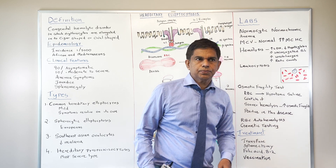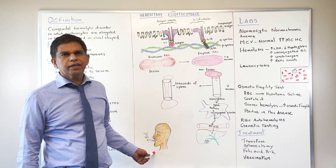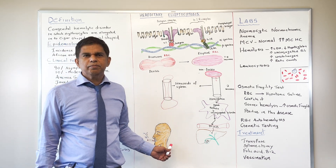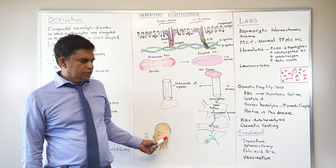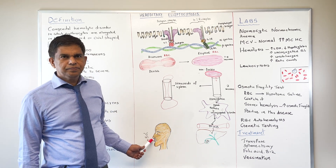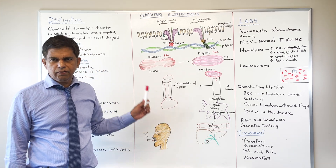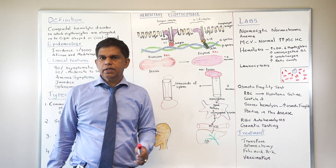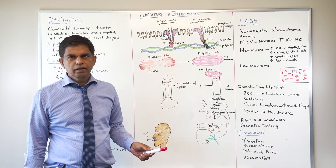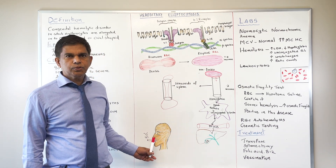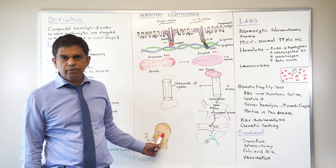Make sure you vaccinate those patients. The most important picture to remember is jaundice from hemolysis and cigar-shaped cells. A useful memory aid: picture a jaundice man smoking a cigarette — cigar-shaped cells, and jaundice because of hemolysis. If you can remember this picture, you know pretty much everything about hereditary elliptocytosis.